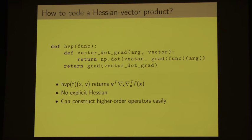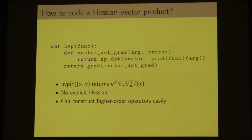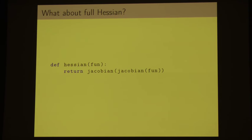Just to show off — here is us implementing a Hessian-vector product in Autograd. The Hessian-vector product is defined mathematically as the Hessian times the vector. It turns out you can construct this using a closure: define the dot product of the vector with the gradient of the function, then take the gradient of that. This defines the Hessian-vector product and costs only about four times as much to evaluate as the function itself, without explicitly forming the Hessian. We also have a helper function called `jacobian`, which calls grad on every output. And if we want a Hessian function, we just take the Jacobian of the Jacobian. This is actually running code.